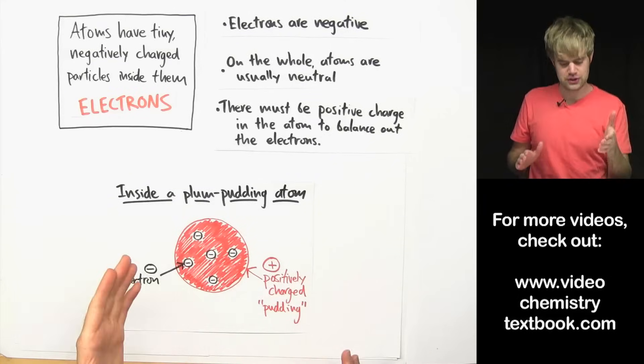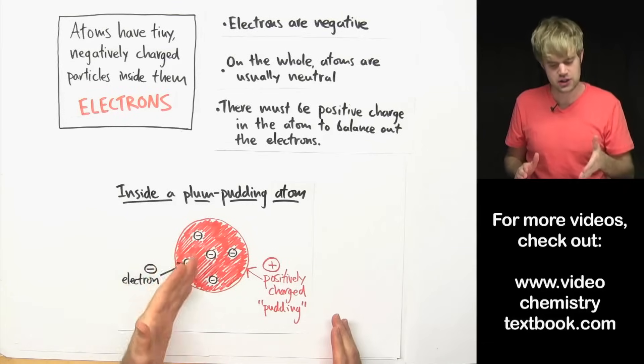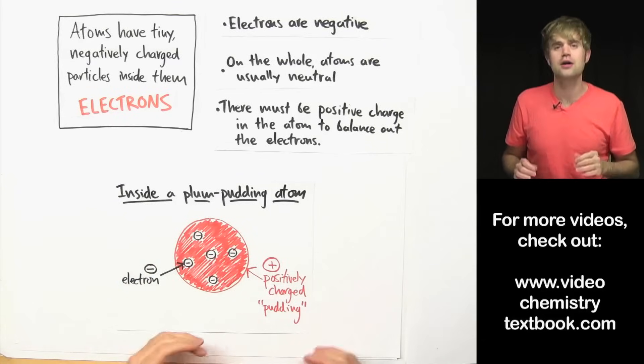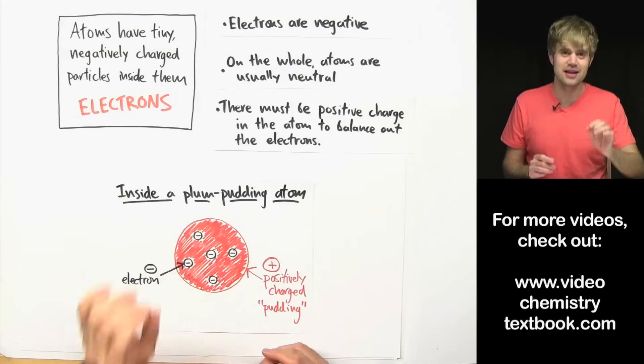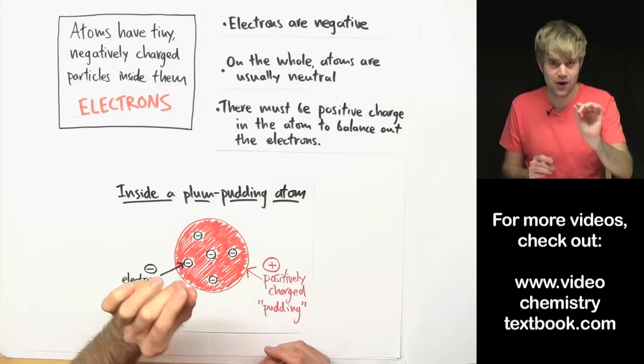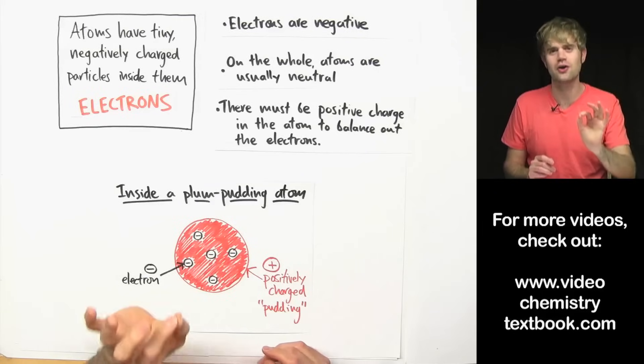If you're interested in how scientists disproved JJ Thompson's plum pudding model, check out Rutherford's gold foil experiment where he discovers that atoms have a very small, very dense, positively charged nucleus.